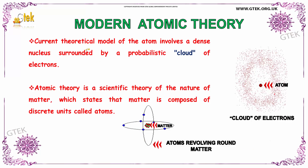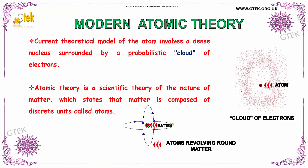Looking at modern atomic theory, the current theoretical model of the atom involves a dense nucleus surrounded by a probabilistic cloud of electrons. Atomic theory is a scientific theory of the nature of matter, and it states that matter is composed of discrete units called atoms.